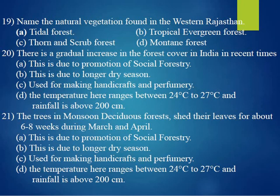Nineteenth question: name the natural vegetation found in western Rajasthan. The correct answer is C, thorn and scrub forest. Twentieth question: there is a gradual increase in the forest cover in India in recent times. The answer is that this is due to the promotion of social forestry. As the government is implementing social forestry, forest areas have increased in India.